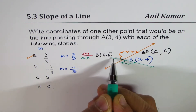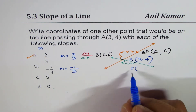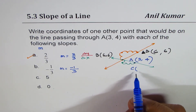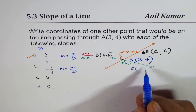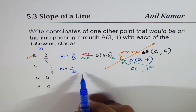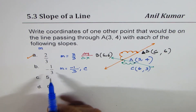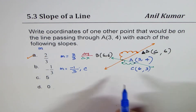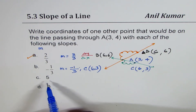Let's call this point C. The coordinates of point C: we went down by 1, so the y value is 4 - 1 = 3, and the x value increased by 3, so 3 + 3 = 6. Point C, which lies on the line with slope -1/3, is (6, 3).